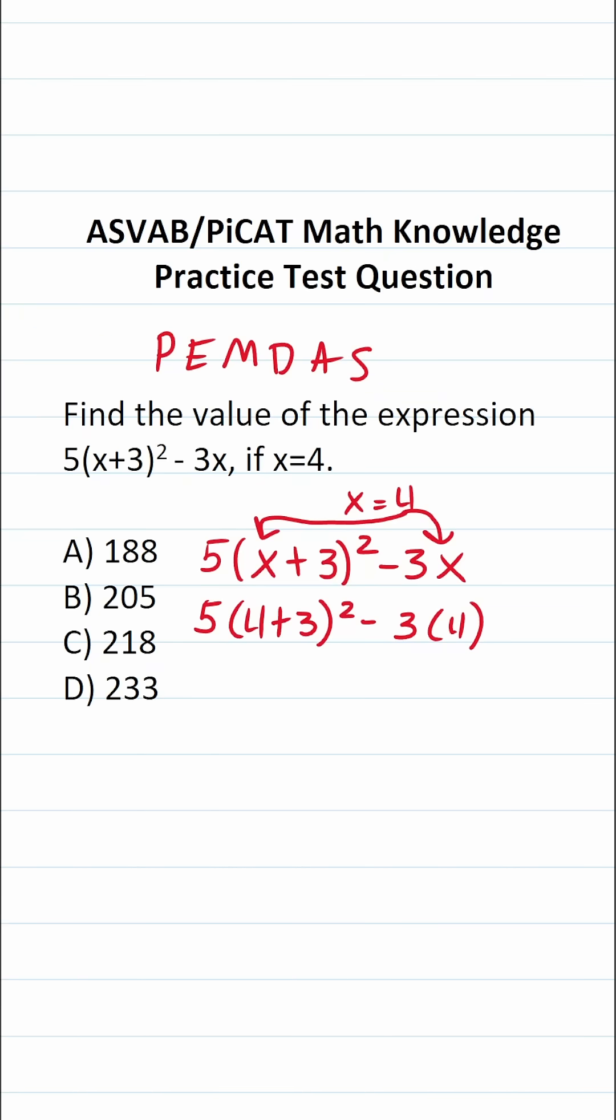It says you work out what's in parentheses first, exponents next, multiplication and division as they appear in the expression from left to right that is to say they're treated as equals, and then finally addition and subtraction as they appear in the expression from left to right. Once again addition and subtraction are treated as equals.